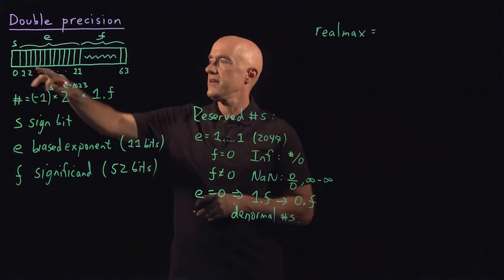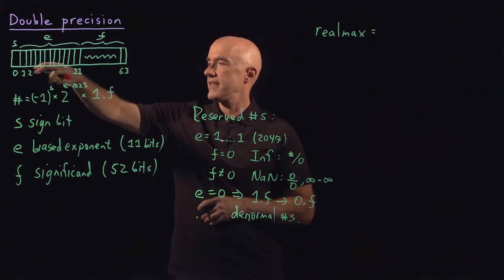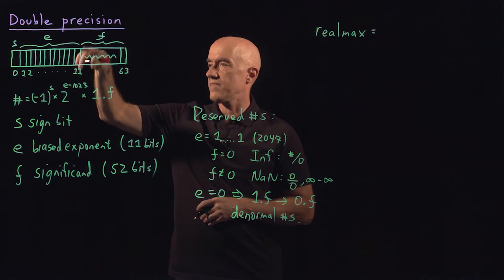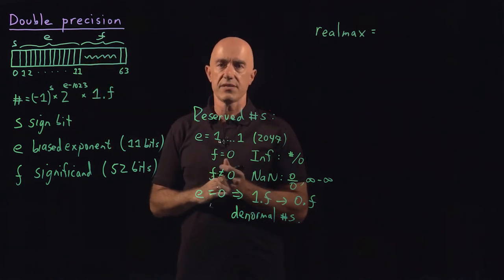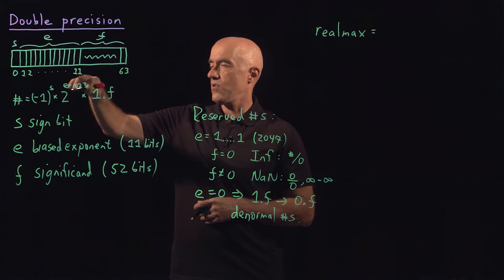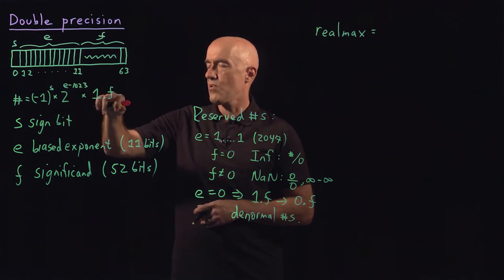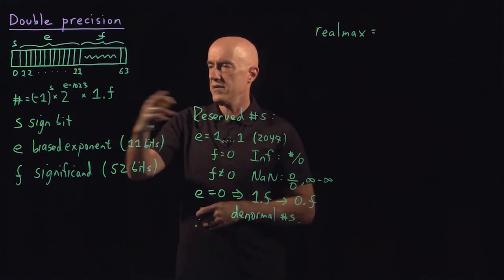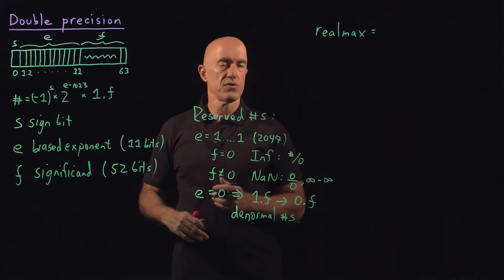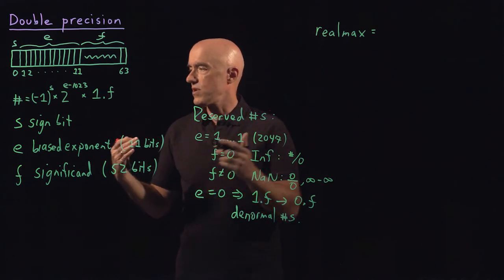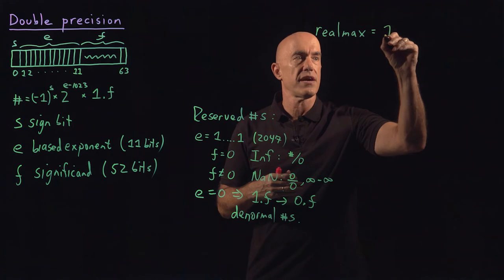You have to calculate it. But a string of 10 ones with the last bit is a zero should be 2046. So that would be a very large power of two times one point all ones here. So this is a number close to two.